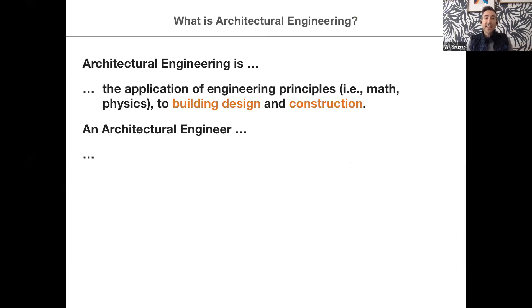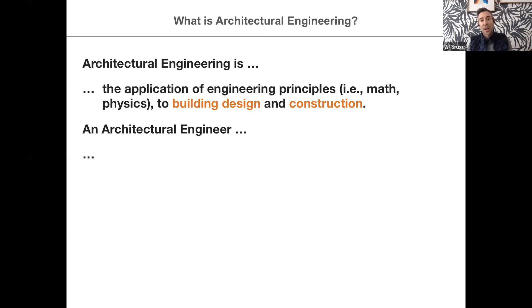Architectural engineering is the application of engineering principles — math and physics explicitly — to building design and construction. Architectural engineering is not necessarily architecture, although you do learn some principles of architecture: the design, form, function, and space planning throughout the degree program. But really, an architectural engineer loves math and science and really does love applying those principles to buildings.